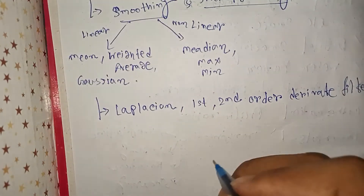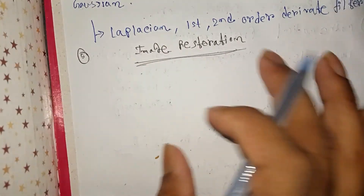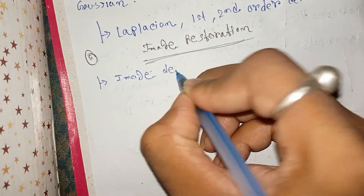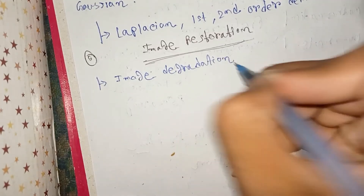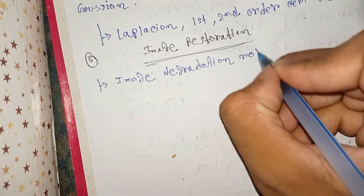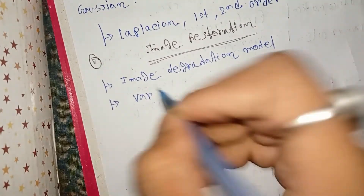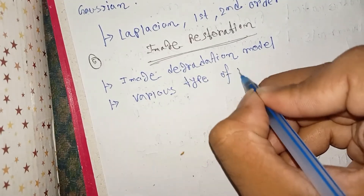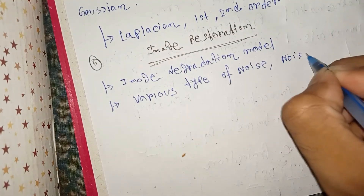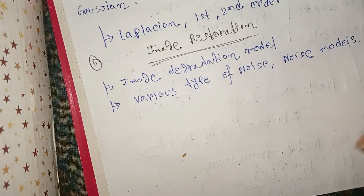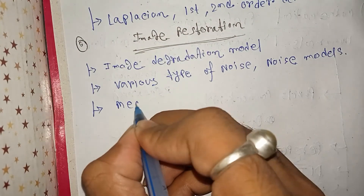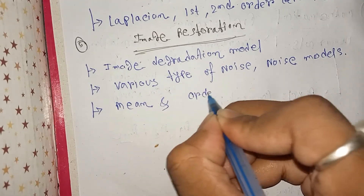Chapter five is Image Restoration. The first important topic is the image degradation model. Next are the various types of noise models and noises. Also study mean and order statistic filters for this chapter.